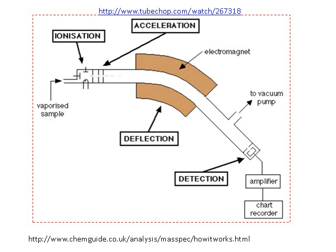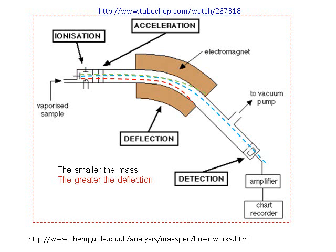The sample to be tested is vaporised and placed inside the ionisation chamber. Here, an electric field removes electrons from the sample, creating positively charged particles. These positively charged particles are then accelerated by an electric field and pass into the field of an electromagnet. The electromagnet acts on the charged particles, causing their movement to be deflected. By manipulating the electromagnet, we can arrange for a charged particle to pass right through the machine and be collected by the detector at the end. The signal can be amplified and the number of ions with that particular charge can be recorded.